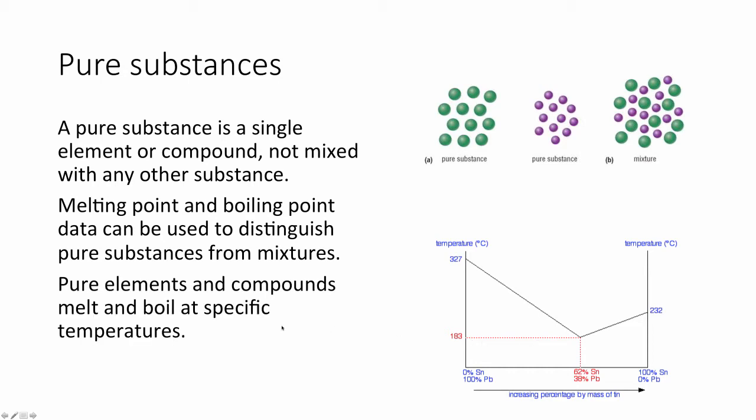Pure elements and compounds melt and boil at specific temperatures, and we can use this to identify whether something is pure or is a mixture. If something has a small range of melting point, just one or two degrees, we can assume it to be pure. If it has a large range, we can assume it to be a mixture.